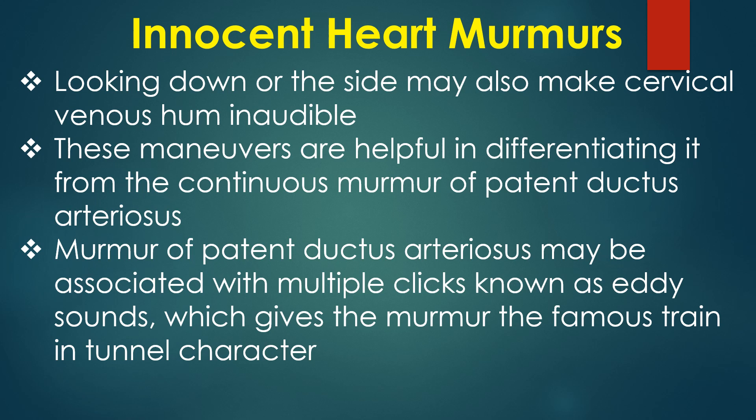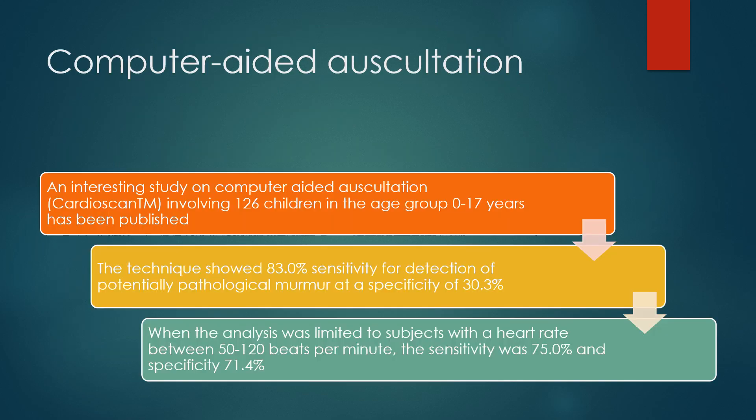Murmur of patent ductus arteriosus may be associated with multiple clicks known as eddy sounds, giving the famous train-in-tunnel character. An interesting study on computer-aided auscultation involving 126 children aged 0–17 years showed 83% sensitivity for detection of potentially pathological murmur at a specificity of 30.3%. When analysis was limited to subjects with heart rate between 15–120 beats per minute, sensitivity was 75% and specificity 71.4%.